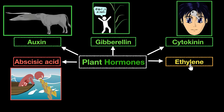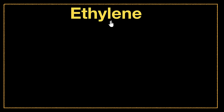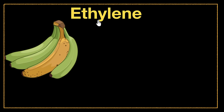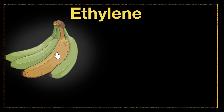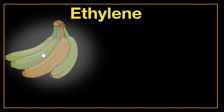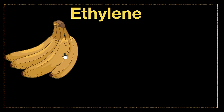That brings us to the last hormone: ethylene. It's put in yellow because it's hard to categorize as a growth inhibitor or promoter. Ethylene is a chemical you learn about in chemistry, and its major job is fruit ripening. Ethylene is a gas that gets released and causes the cell wall to break down, making the fruit softer, and it also releases stored sugar making the fruit sweet. When a fruit ripens it causes more ethylene to form, which accelerates the ripening of other nearby fruits in a chain reaction.